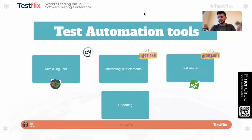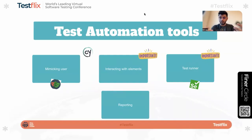But out of these four capabilities, two are the ones we'll be focusing on most: one is interacting with the elements, and the other is the test runner capabilities. It will be coming up in the next few slides and I'll be joining the dots on what it brings to the table.